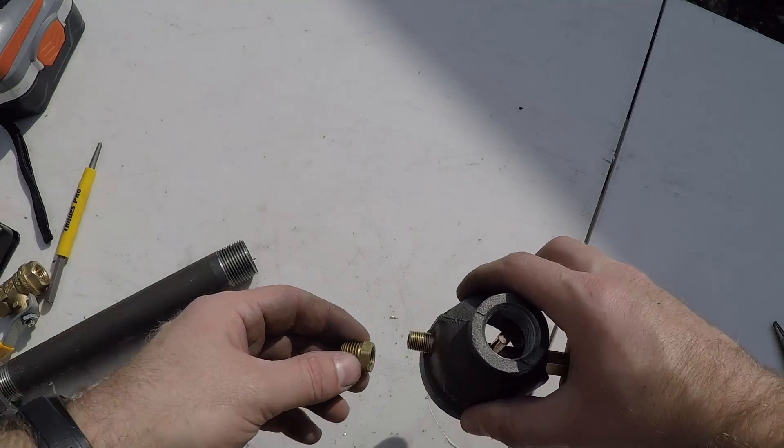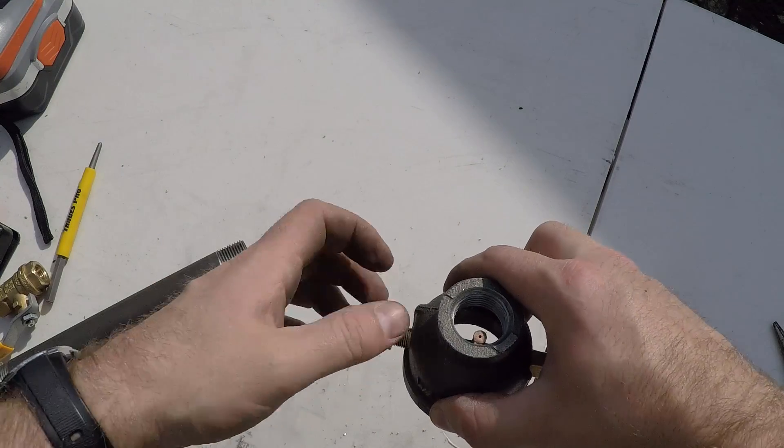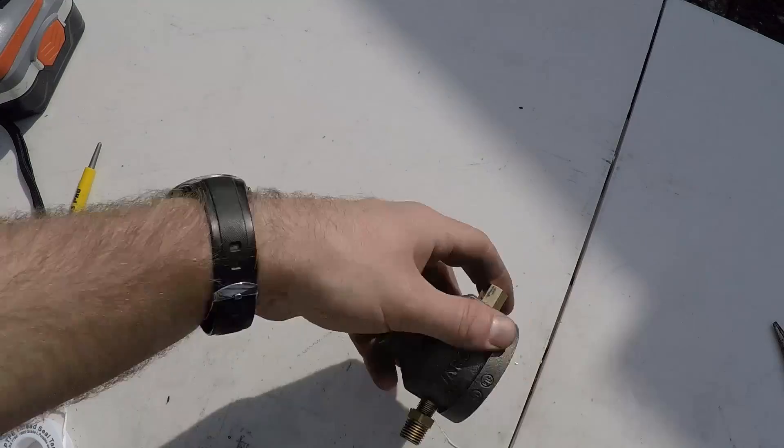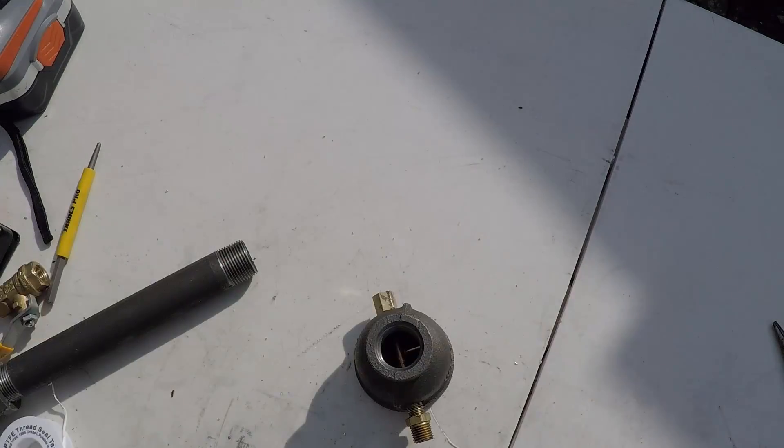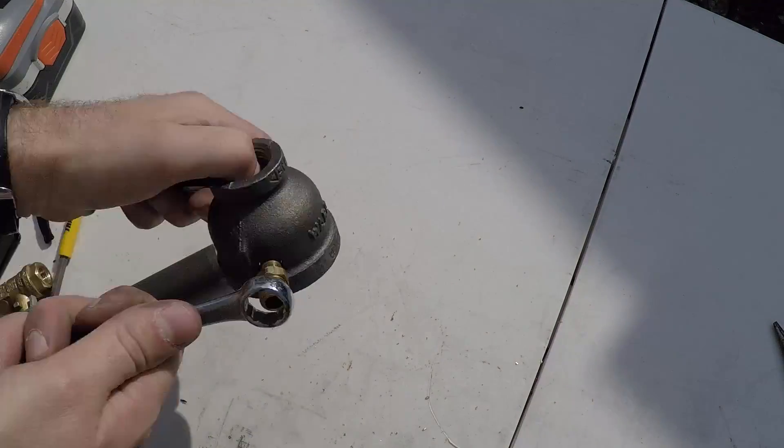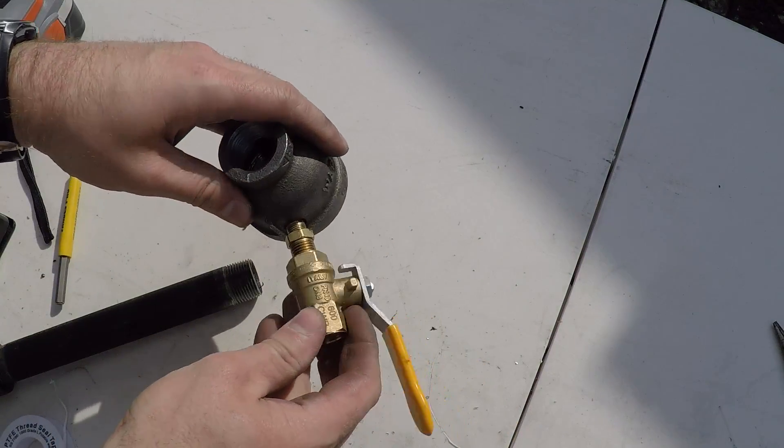Now you can add the reducer bushing. Snug that up with a wrench. And finally add your quarter inch ball valve.